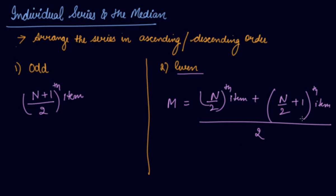Then what you will do? n divided by 2 plus 1. The 4 plus 1 which is 5th item you will see in the series. So what you will do? You will take the 4th and the 5th item, add them and divide by 2. You will get your median. But first and foremost thing is you have to arrange the series into ascending or descending order. Either you can do it in the ascending order or you can do it in the descending order.